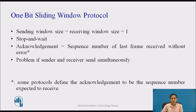With this protocol, the communication is full duplex, that is both machines can send and receive. The problem with stop-and-wait protocol is that at any moment, only one frame is in transit. The sender will have to wait at least one round trip time before sending the next frame. The waiting can be long for a slow network such as a satellite link.